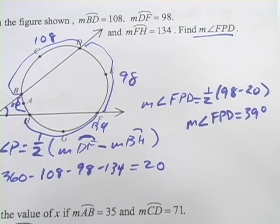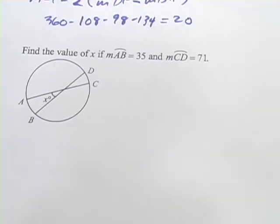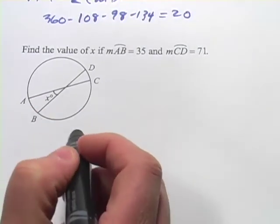So the measure of FPD equals 39 degrees. That's all there is to that one. Let's look at another situation here.